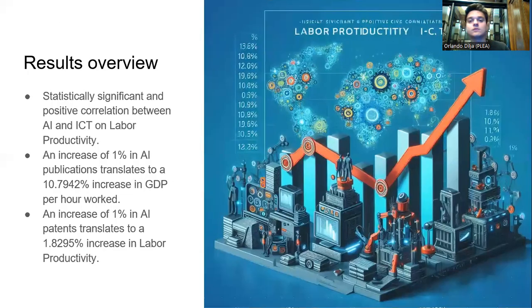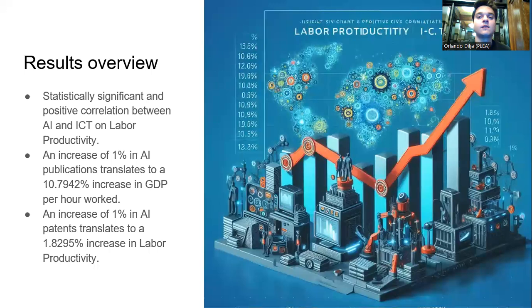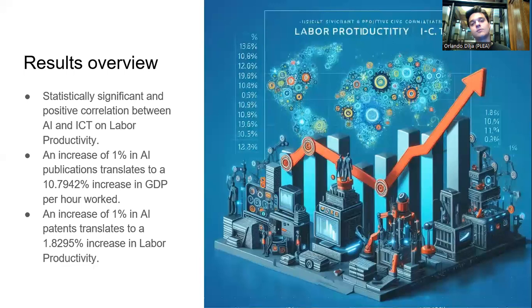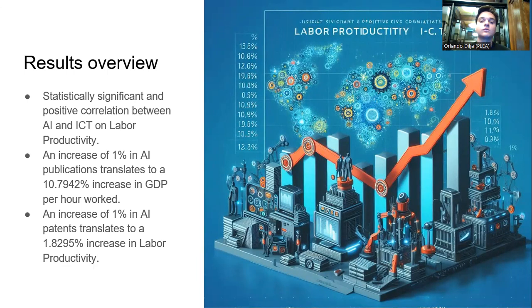Most importantly, our results showed a statistically significant and positive correlation between AI and ICT and labor productivity. Specifically, as we said before, an increase of 1% in AI publications translates to a remarkable 10.79% increase in GDP per hour worked. And also, an increase of 1% in AI patents correlates with a 1.83% increase in labor productivity. These findings strongly support our hypothesis that AI and ICT positively contribute to labor productivity in OECD countries.